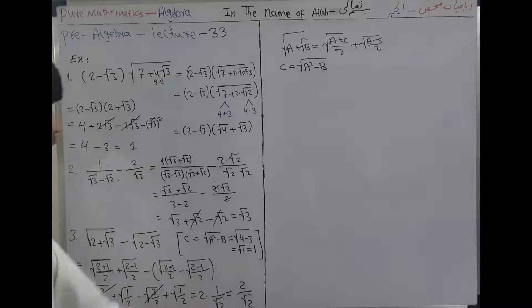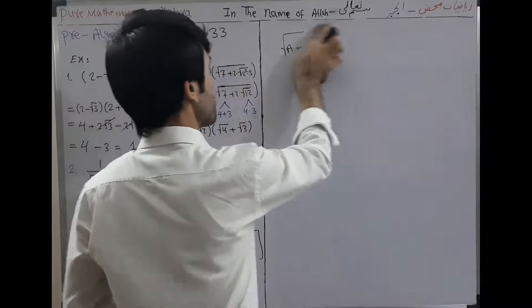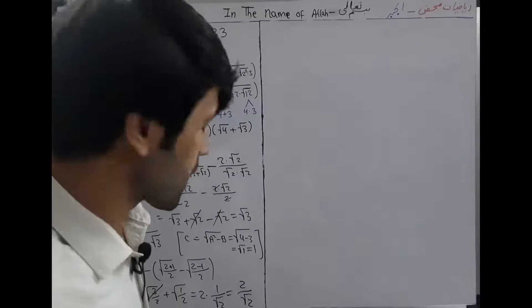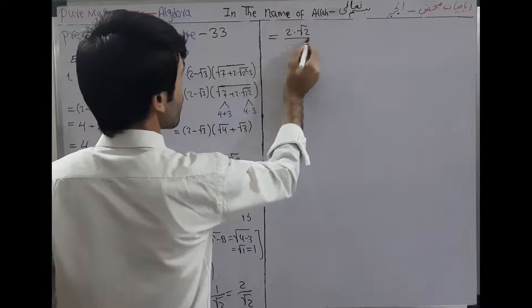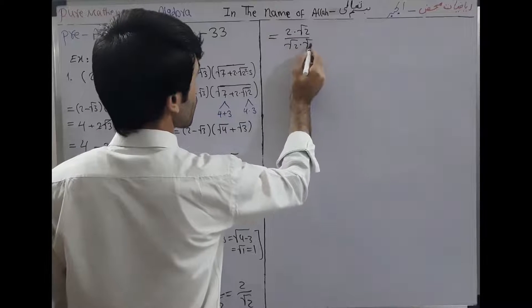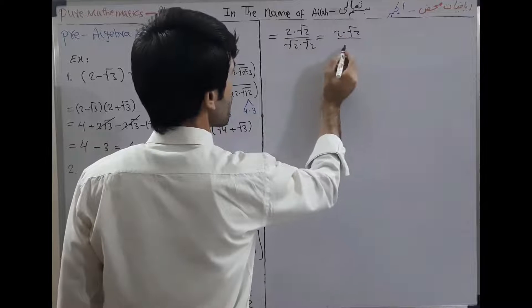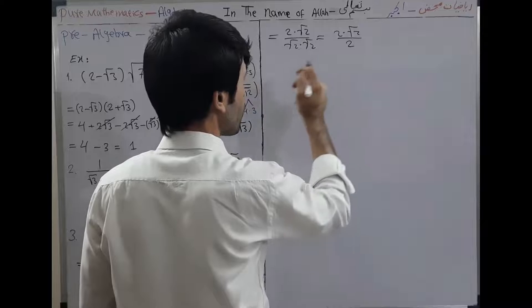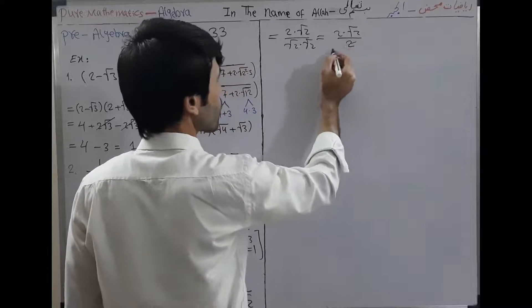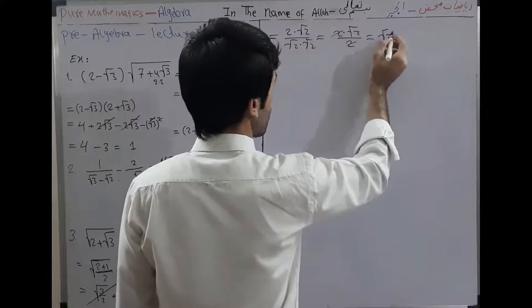We rationalize: 2/√2 = 2·√2 / (√2·√2) = 2√2 / 2. Then 2/2 cancels and we get √2. That is the answer to Question 3.